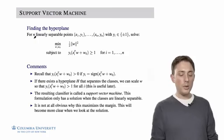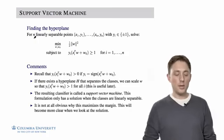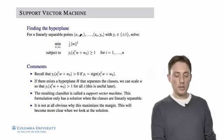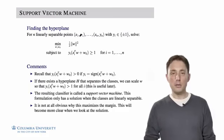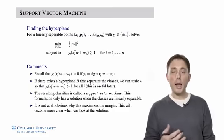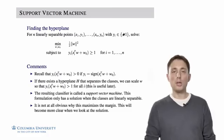We're going to assume that we have N linearly separable points, labeled data pairs XI, YI, where XI is in RD, and YI is a binary label. It's either plus one or minus one. So we're doing binary classification here.